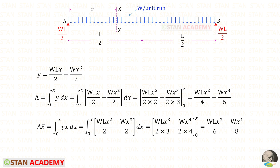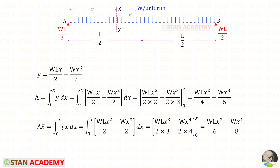To find the area of the parabola about the section we have to integrate y with limits 0 to x. For x it will be x²/2 and for x² it will be x³/3. The limits are x and 0; since all members become 0 at the lower limit, we directly write the result. To find the moment area we multiply by x then integrate: x × x gives x², and x × x² gives x³. Integrating: x² gives x³/3 and x³ gives x⁴/4.